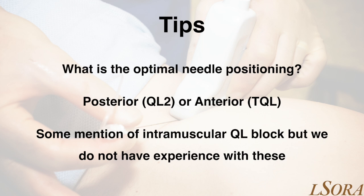In terms of what to block when, the current vogue is either towards a posterior quadratus lumborum block — similar to a posterior TAP — or the anterior or transmuscular quadratus lumborum block. There has been some mention in the literature about intramuscular quadratus lumborum blocks, but we do not have experience with these.